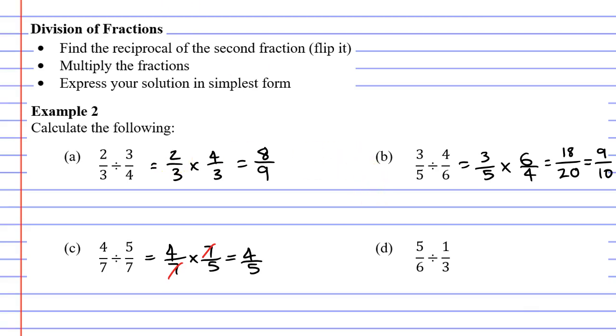All right, moving on to question D. Once again, the first fraction stays the same, 5 over 6. The second fraction is flipped. It becomes 3 over 1. And the divide becomes times.